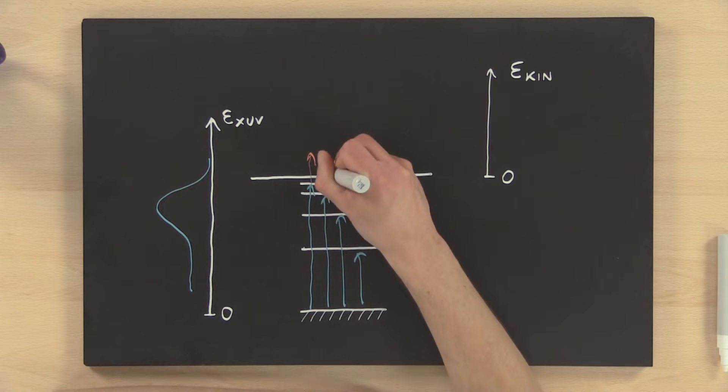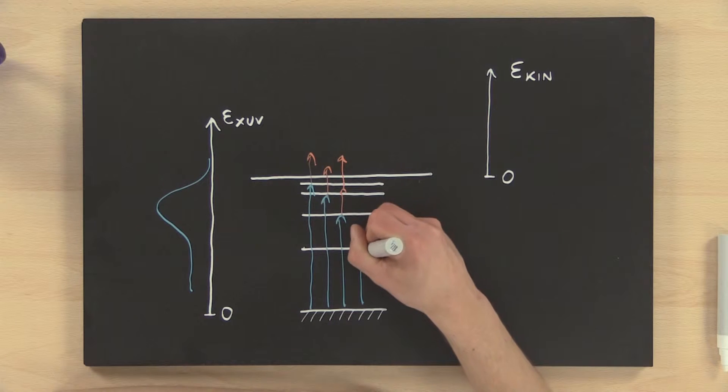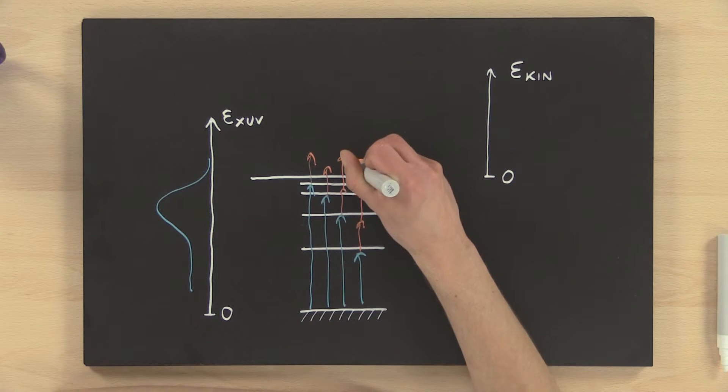Now, it is clear that because of the broad bandwidth of the attosecond pulse, many different bound excited states can be involved as intermediate states of the process.